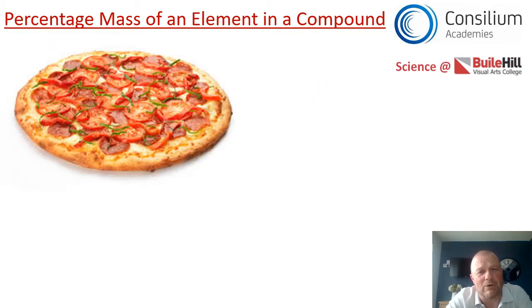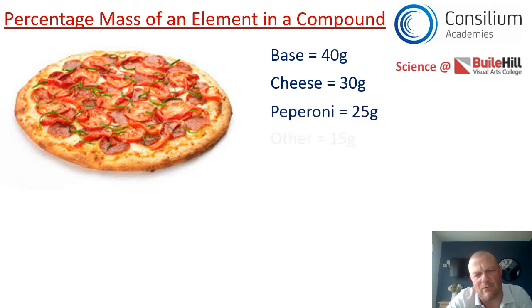I'm not going to lie, that is the best looking pepperoni pizza I think I've ever seen. And we're going to use that picture and the mass of that pizza as an analogy for us to calculate the percentage mass of an element in a compound. Okay so if you understand this you've got a really good chance of being successful in today's lesson. That base of that pizza, if we were to take its mass we're going to say that it's equal to 40 grams. The cheese on that pizza is equal to 30 grams. The pepperoni 25 grams and anything else in there, so the herbs and a bit of tomato and the peppers, maybe the chilies comes to 15 grams. So if we add those together the pizza's mass is 110 grams.